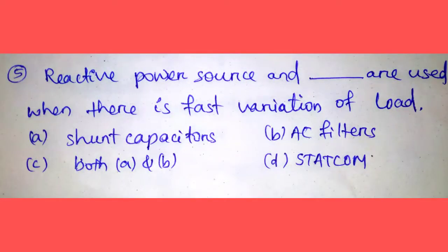Question number five: Reactive power source and dash are used when there is fast variation of load. Option A: static capacitors, Option B: AC filters, Option C: both A and B, Option D: STATCOM. For fast variation of load, the correct answer is Option D, STATCOM.